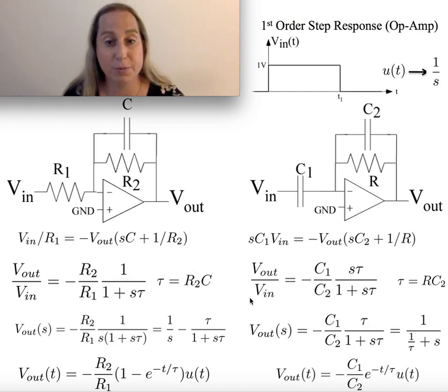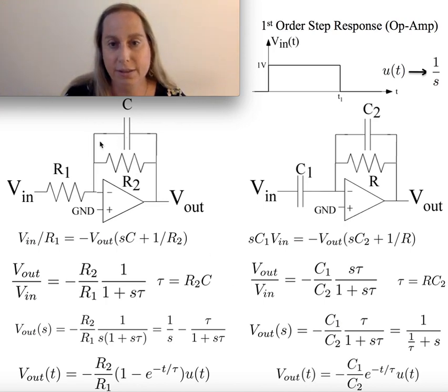One's a low pass, one's a high pass response. Where the tau in both cases is related to sort of an RC that's related to what's in the feedback aspect of the structure.